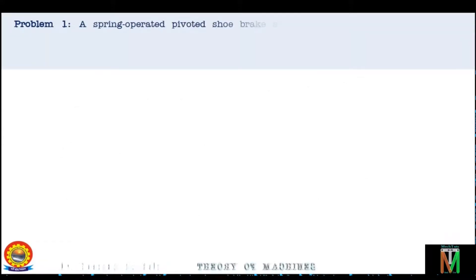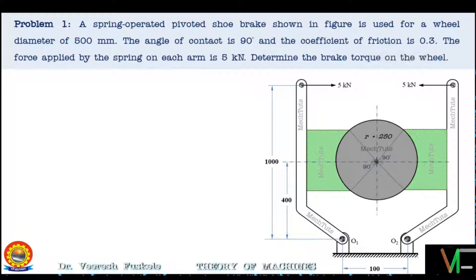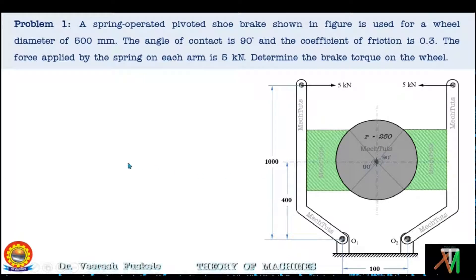Problem 1: A spring-operated pivot shoe brake is used for a wheel of diameter 500 mm. The angle of contact is 90 degrees and the coefficient of friction is 0.3. The force applied by the spring on each arm is 5 kN. Determine the braking torque on the wheel. The radius is 250 mm, L is 1000 mm, distance A is 400 mm, and the distance between the pivot points is 100 mm. Note that the direction of rotation is not given, so we have to assume a direction of rotation.